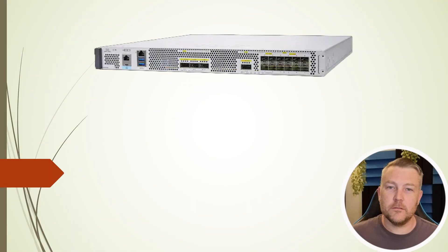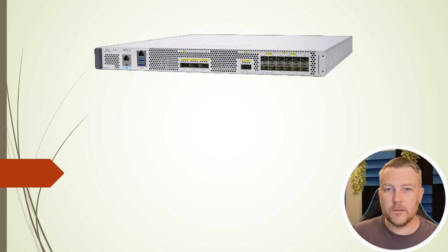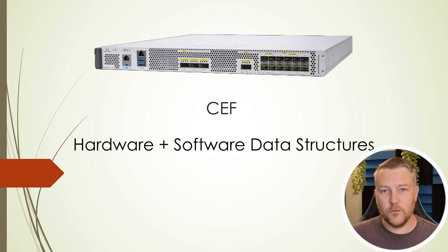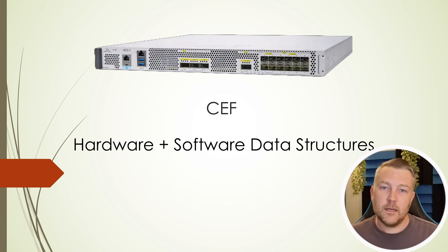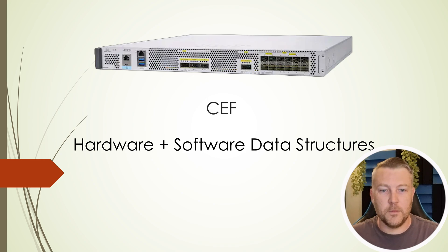When packets come into a router, the router needs to quickly make a decision on how to forward those packets. Cisco routers use CEF for this — that's C-E-F — and this is a combination of hardware and software as well as data structures. Ideally, a packet will come in, it will be handled by CEF, and it'll be quickly sent back out again, without needing to get the route processor or general CPU involved.